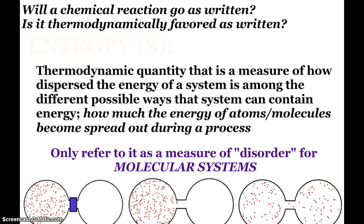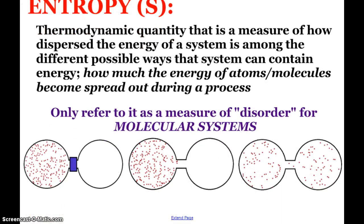So will a chemical reaction go as it is written? Is it thermodynamically favored as it's written? And this is where we look at entropy. It's a thermodynamic quantity. It's a measure of how dispersed the energy of a system is among all the different possible ways that that system can contain energy. How much does the energy of our atoms or molecules become spread out during a process? Now, another connection is that people always want to say entropy is a measure of disorder. Fortunately for us in chemistry, we can allow that to be talked about because we should really only refer to entropy as a measure of disorder for molecular systems.